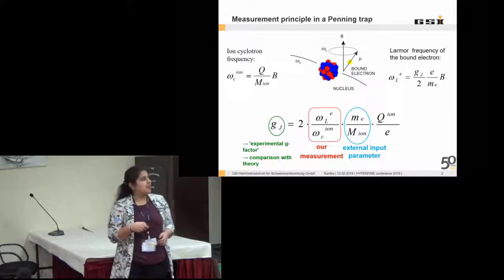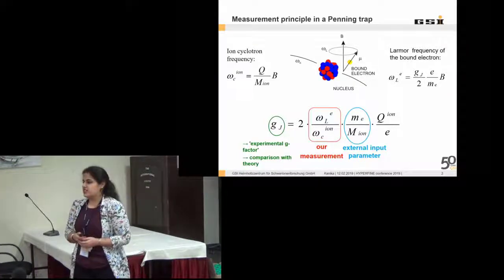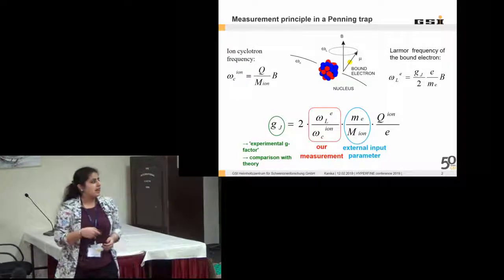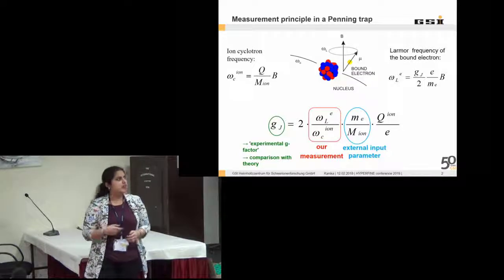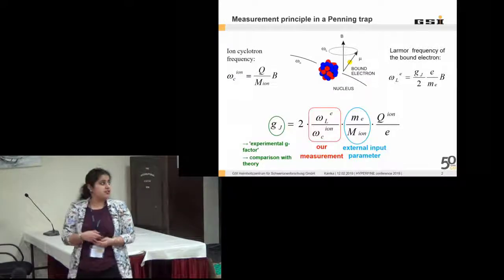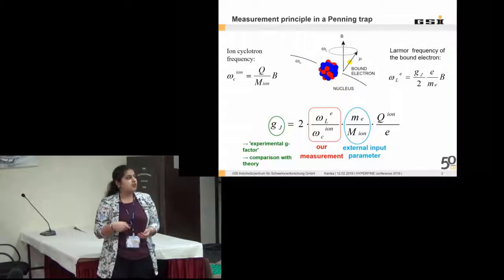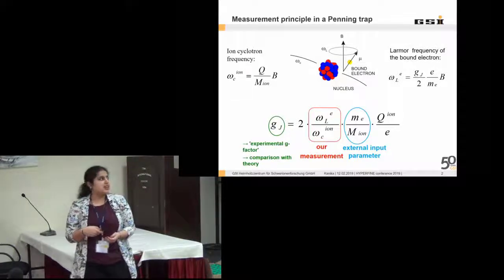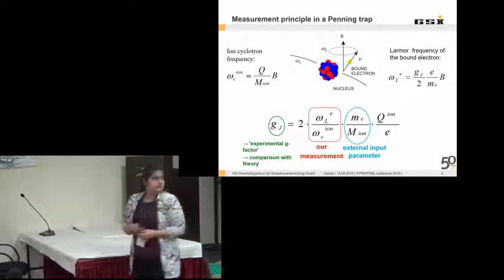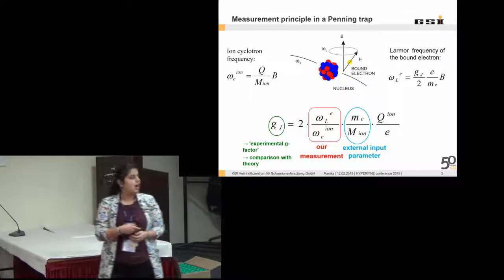From here we can derive a relation for g, that is the g-factor we want to calculate. What we want to measure with our experiment is the ratio between omega l and omega c. The rest we can obtain from the numbers. So let's have a look at how we measure this ratio.